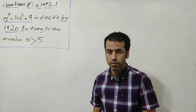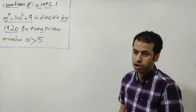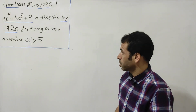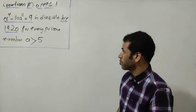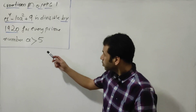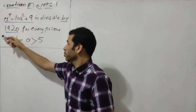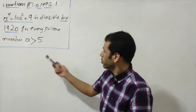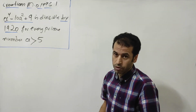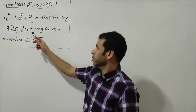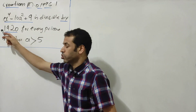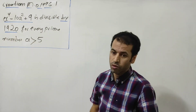In this video I would like to introduce a very nice problem from the Croatian Mathematical Olympiad, edition 1996, question number one. The setup is: eight to the fourth minus ten times e squared plus nine is divisible by 1920 — in other words, this term is a multiple of 1920 for every prime number e strictly greater than five. This is a very straightforward problem; we are going to factor out this term and extract the prime factorization of 1920.